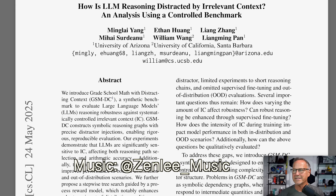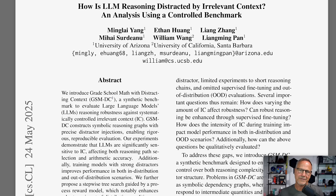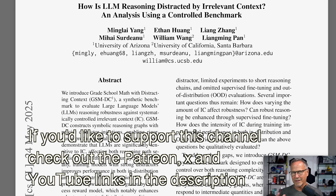It's related to this paper called 'How is LLM reasoning distracted by irrelevant context? An analysis using a controlled benchmark.' The basic idea is that if you give a large language model — a model that can think, or at least a stochastic parrot — a reasonable question, it will give you a reasonable answer. But if you give it that same question with a bunch of irrelevant context, it will get distracted and can often give you the wrong answer.